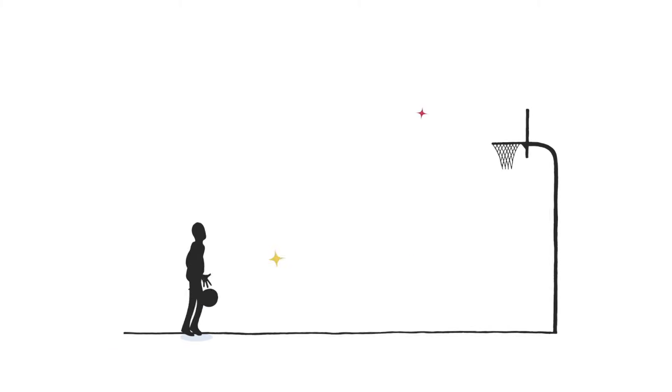Now we can use this equation to model MJ's free throw dunk. Say MJ starts, as one does, at zero meters off the ground.